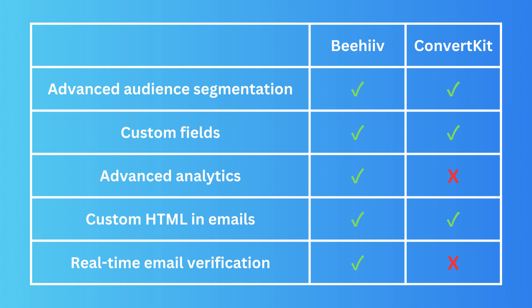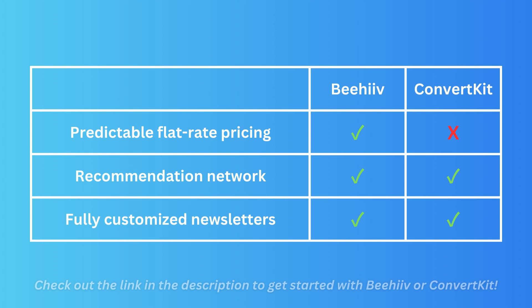Custom HTML in emails — both companies get a point here as they both have it. For real-time email verification, Beehive wins again because ConvertKit does not have this option.